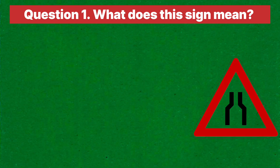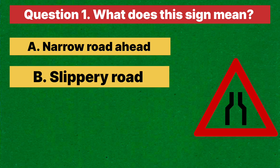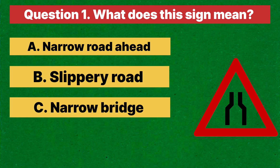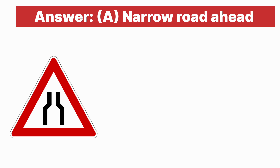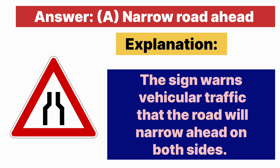Question one: What does this sign mean? A. Narrow road ahead. B. Slippery road. C. Narrow bridge. D. Widen road ahead. Answer is A, narrow road ahead. Explanation: the sign indicates to traffic that the road will narrow ahead on both sides.